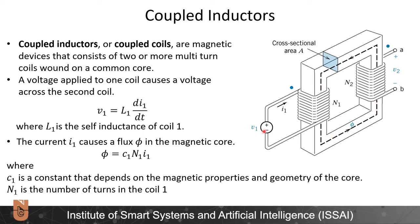A voltage applied to one coil V1 causes another voltage across the second coil. Let's assume that the input voltage V1 is equal to L1 times dI1 over dt for the first coil, and L1 is the self-inductance of this first coil. The current I1 causes a flux phi inside this magnetic core, given by phi equals C1 times N1 times I1, where C1 is a constant that depends on the material and geometry of the core, and N1 is the number of windings.